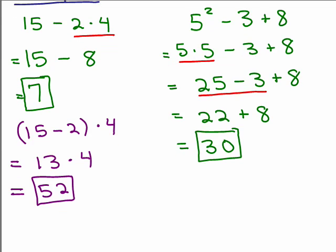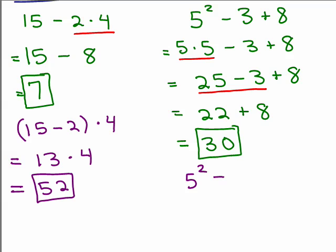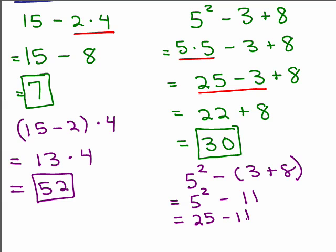What if the second example had parentheses around a different part — say 5 squared minus (3 plus 8)? This is a completely different problem. We simplify inside the parentheses first: 3 plus 8 is 11. Then we get 5 squared minus 11. 5 squared is 5 times 5, which is 25, so 25 minus 11 equals 13. You can see that parentheses around part of a problem can make a real difference in the final answer.